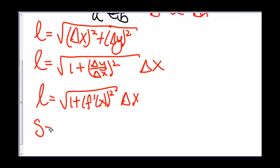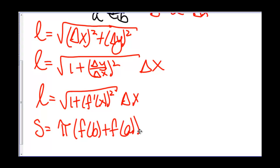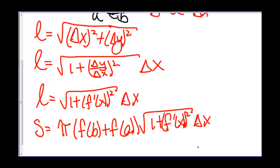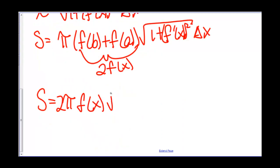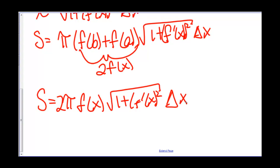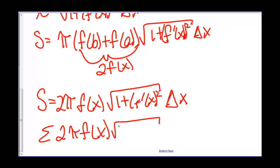So our whole surface area equals π times (f of b plus f of a) times the square root of 1 plus (f′(x))² times Δx. And as our change in x goes to 0, f of b and f of a are going to get very close together, so we can rewrite this as approximately 2·f(x). The surface area equals 2π times f(x) times the square root of 1 plus (f′(x))² times Δx. And we're adding a whole bunch of these up, so we get the sum of 2π·f(x) times the square root of 1 plus (f′(x))² times Δx.